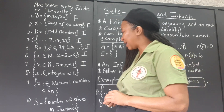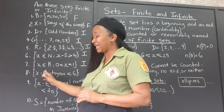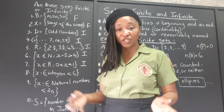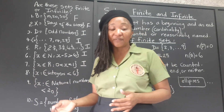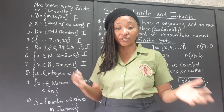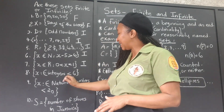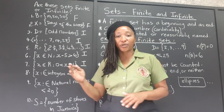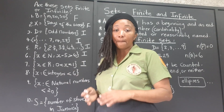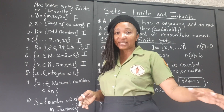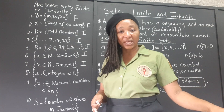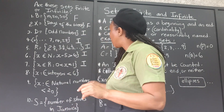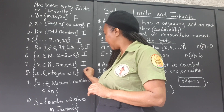X is an integer — an element of the set of integers. Remember, we have positive integers, negative integers, and zero, where X is less than 6. Six is where the set terminates, but because the negative integers go on to infinity, the set has no beginning. So this is also an infinite set.